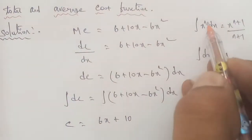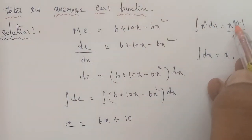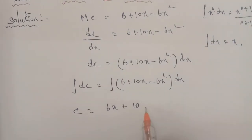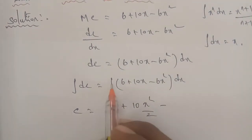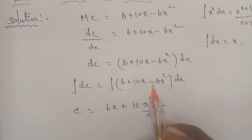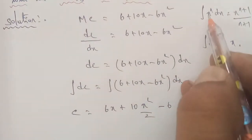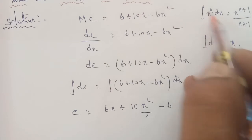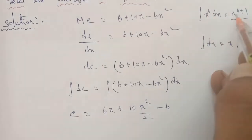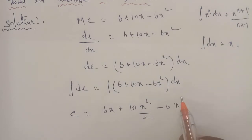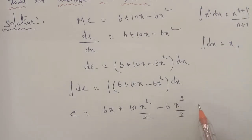Using the power rule: integration of x dx, which is x to the power 1, gives x power 1 plus 1 divided by 1 plus 1, that is x square by 2. Next, integration of minus 6x square: minus 6 is constant, and integration of x square gives x power 2 plus 1 divided by 2 plus 1, that is x power 3 by 3.